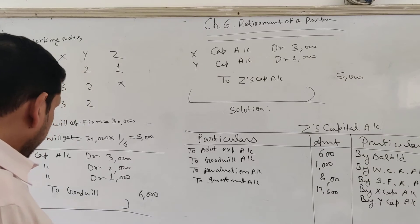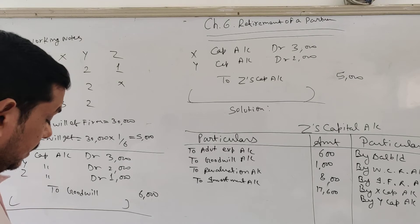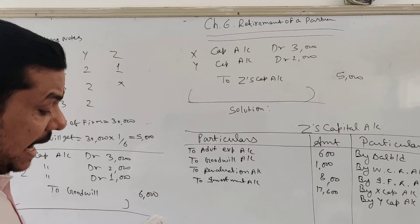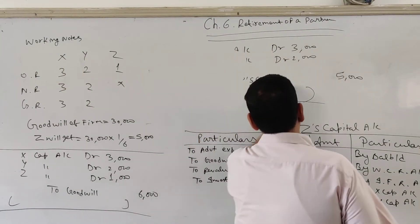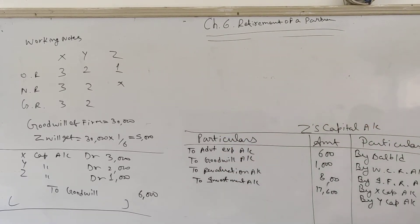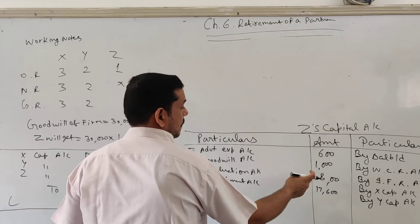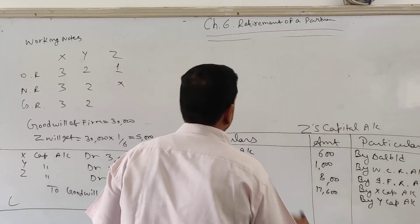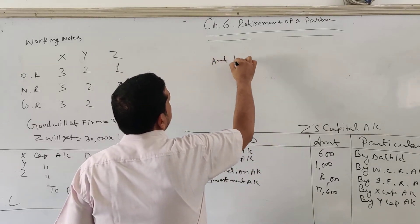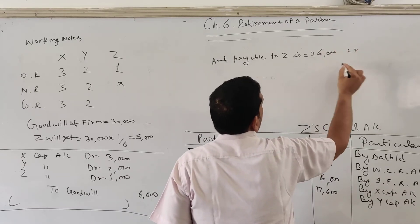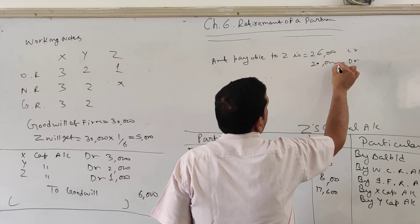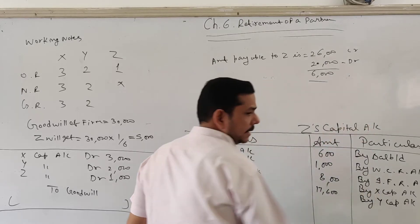Now the question says the amount owed to Z is settled as follows: 50% in cash, 50% of the balance within one year transferred to loan account, and the balance by bill of exchange. To find the amount, we make a total of both sides. Total of the credit side of Z's account is 28,000 and total of the debit side is 20,000.